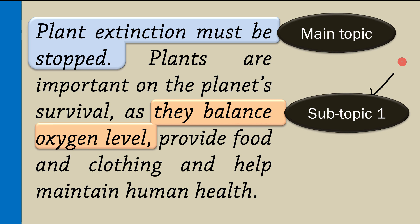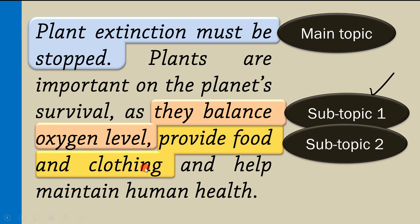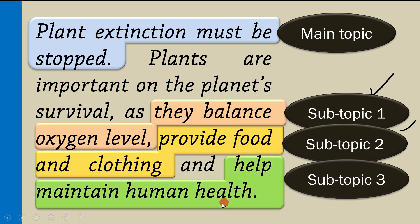The next subtopic is about providing food and clothing — it's different from the first subtopic but also related to the main topic and could be a few paragraphs to a few pages. Then there is a subtopic about human health. So the third subtopic is different but related to the main topic and mentioned in the thesis statement. This way the thesis statement can reflect the entire essay from beginning to end — this is how you are going to prove your claim.